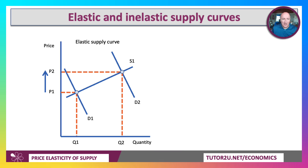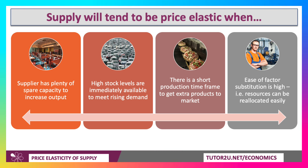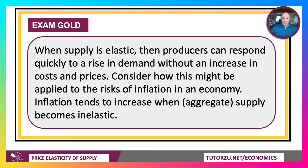Drawing an elastic supply curve: a big increase in demand from D1 to D2 brings about a fairly elastic response. You can increase supply from Q1 to Q2 with only a small rise in price. Supply tends to be price elastic when suppliers have plenty of spare capacity, when there are high stock levels, when there's a short time frame to getting products to market, and when factors of production are mobile. When supply is elastic, producers can respond quickly to a rise in demand without an increase in costs and prices. At the macroeconomic level, when you're coming out of a recession, aggregate supply tends to be fairly elastic and inflationary pressures are weak. Whereas inflation tends to increase when aggregate supply becomes inelastic.